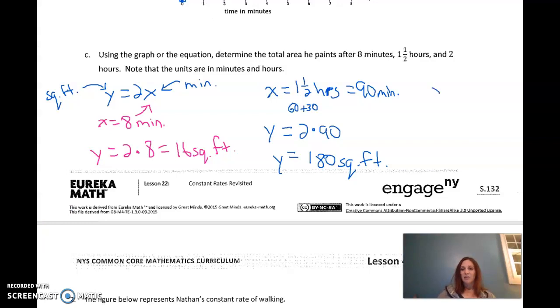How about 2 hours? So if x is equal to 2 hours, well, that's 60 and 60. That's going to be 120 minutes. So, take my equation. The number of square feet equals 2 times the number of minutes. And we get our square feet of 240.